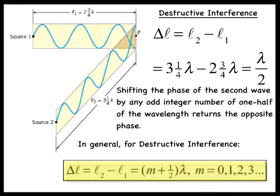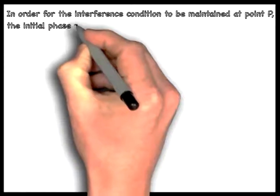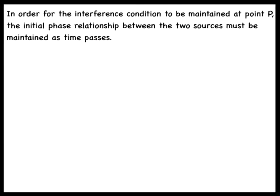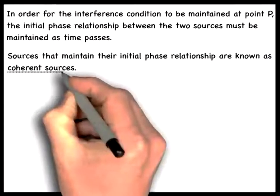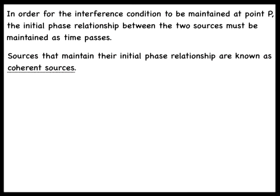In other words, assuming that L2 is the larger distance, whenever L2 minus L1 is equal to (m + one half) times lambda, where m is equal to 0, 1, 2, 3, etc. One final note in this section: in order for the interference condition to be maintained at point P, the initial phase relationship between the two sources must be maintained as time passes. Sources that maintain their initial phase relationship are known as coherent sources.